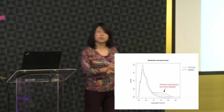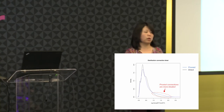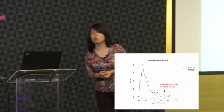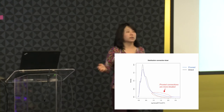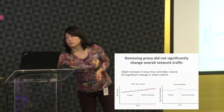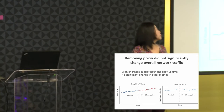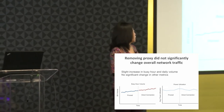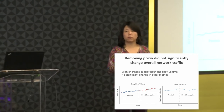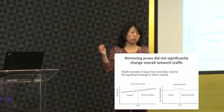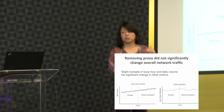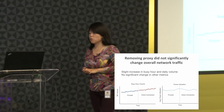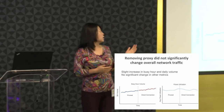The median RTT divided by minimum RTT reflects the buffer bloat problem. It shows proxy connections are more bloated — more packets are in transit somewhere in the network waiting to be delivered. Looking at network statistics from the T-Mobile side, there is some network traffic increase because removing the proxy removes just-in-time delivery, so Google's servers deliver more traffic volume. But compared to the exponential growth of internet traffic, this is not significant. Radio access network power utilization is about the same.